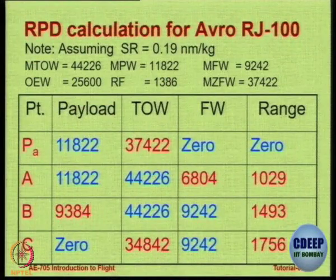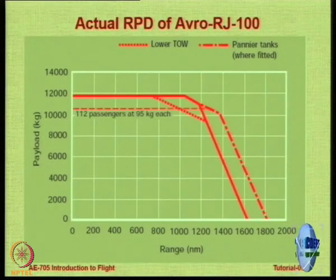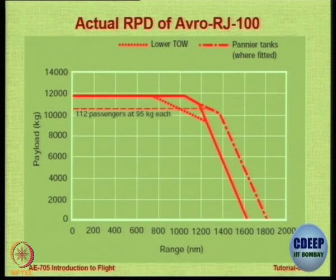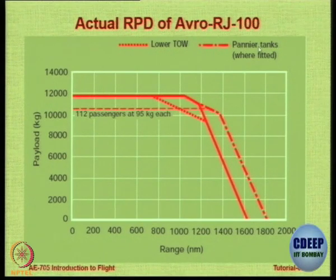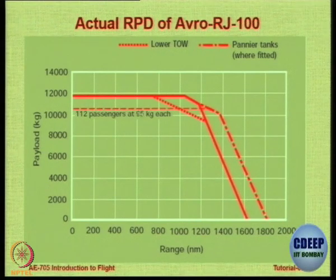Here is the completed table — you can check your numbers. This is the actual range-payload diagram of this aircraft from the operating manual. With 112 passengers at 95 kg each, this is your range-payload diagram.